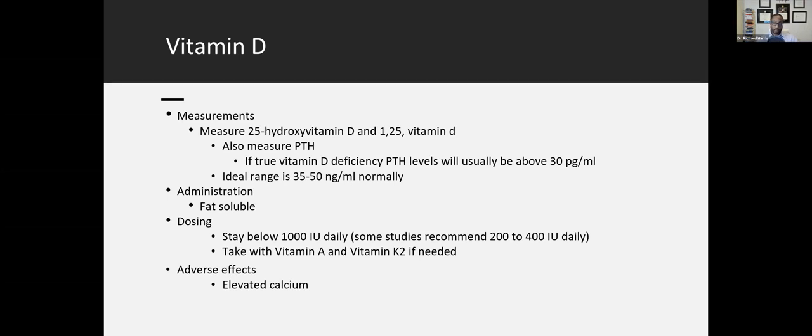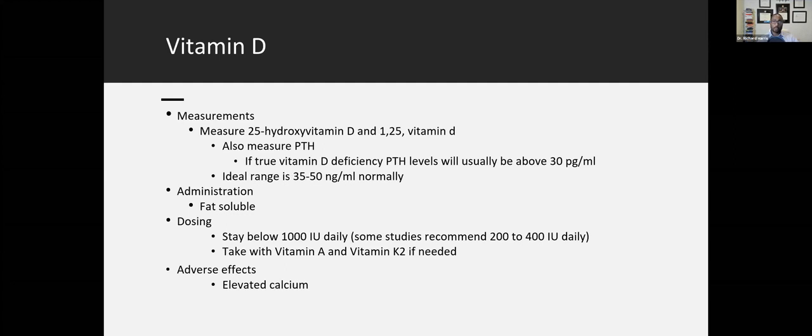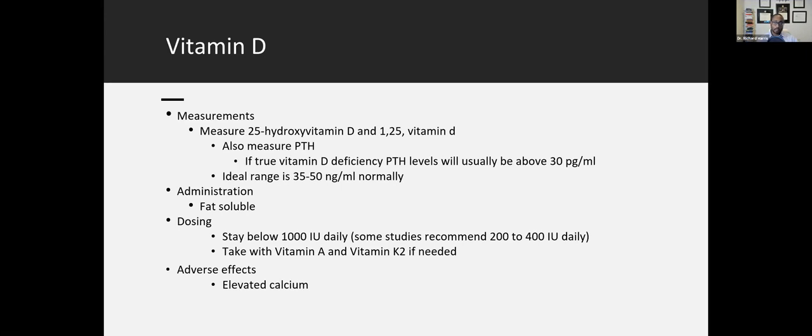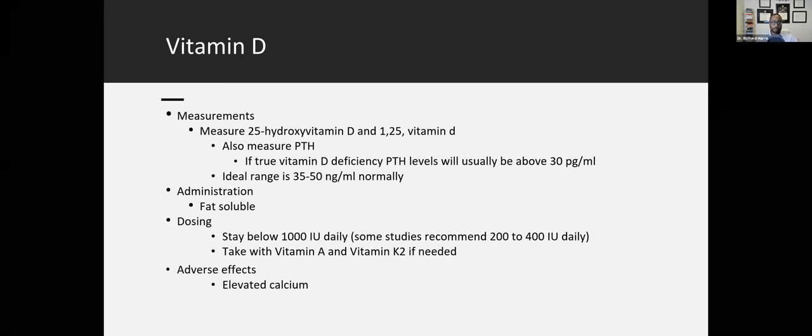But as we talked about, a granulomatous disease like sarcoidosis gets increased amounts of the final enzyme that makes the active 1,25 version of vitamin D. So what a lot of us will recommend and what the research shows is the best way if you have sarcoidosis to check your vitamin D stores is to measure the 25 OH version and the 1,25 OH version. Measure both of these because that lets you know, is the major storage form, the 25, that low, or are we converting too much to the active form?